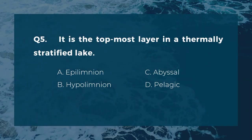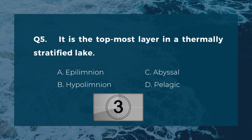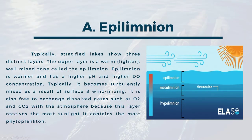Question five: it is the topmost layer in a thermally stratified lake. A) epilimnion, B) hypolimnion, C) abyssal, D) pelagic. The correct answer is A, epilimnion. Typically, stratified lakes show three distinct layers; the upper layer is a warm, lighter, well-mixed zone called the epilimnion. The epilimnion is warmer and has a higher pH and higher dissolved oxygen concentration. It becomes turbulently mixed as a result of surface wind mixing and is free to exchange dissolved gases such as oxygen and carbon dioxide with the atmosphere. Because this layer receives the most sunlight, it contains the most phytoplankton.